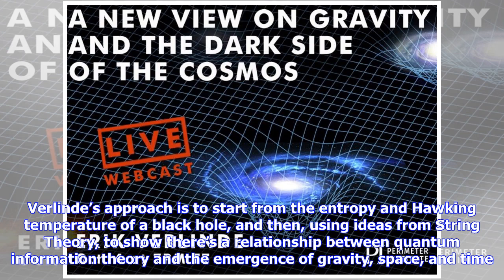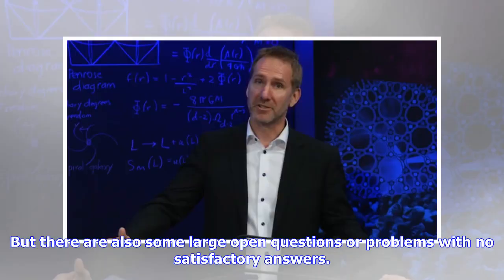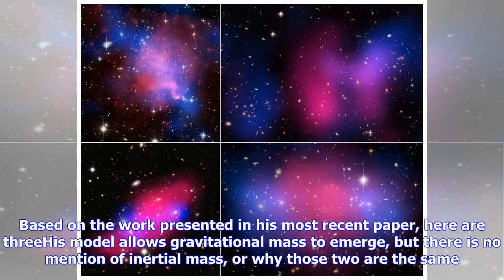Verlinde has been the major proponent working on this idea with a few interesting avenues of progress. Verlinde's approach is to start from the entropy and Hawking temperature of a black hole, and then, using ideas from string theory, to show there's a relationship between quantum information theory and the emergence of gravity, space and time.